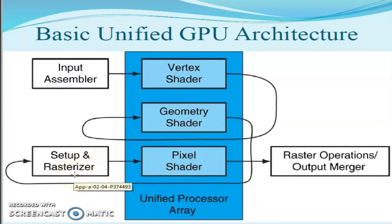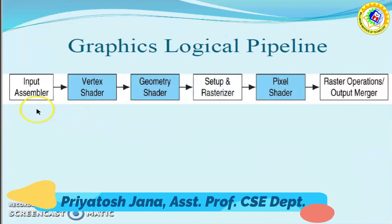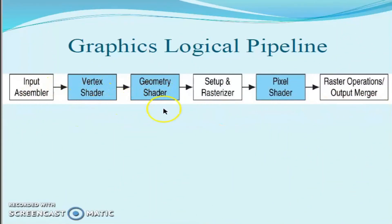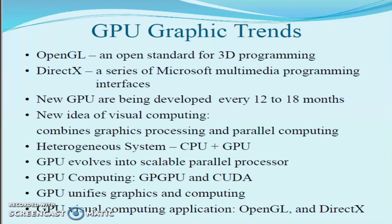Here is the basic unified GPU architecture. The graphics logical pipeline consists of: input assembler, vertex shader, geometry shader, setup and rasterizer, pixel shader, and finally the output merger — also called raster operations.